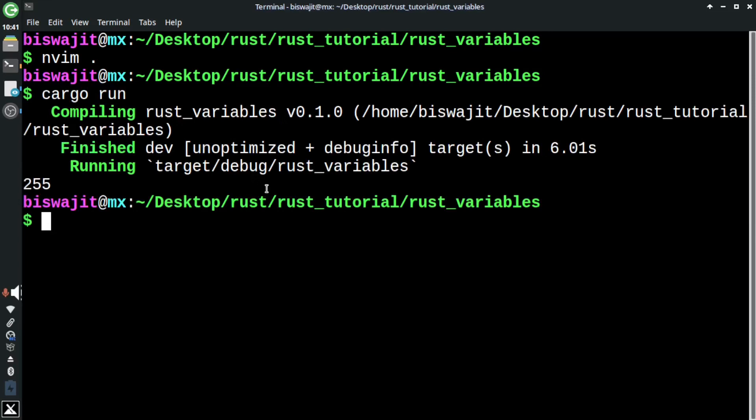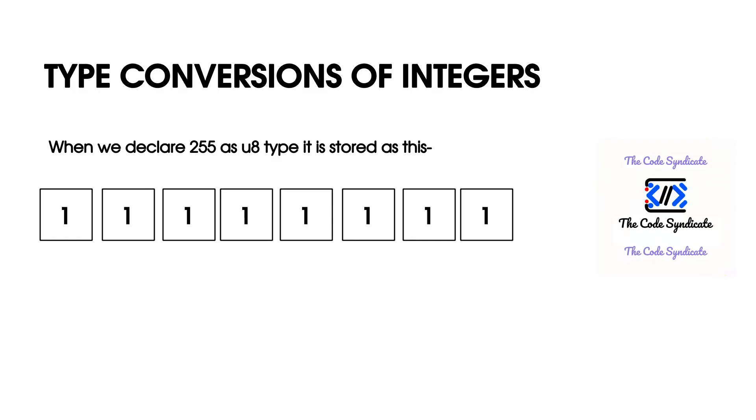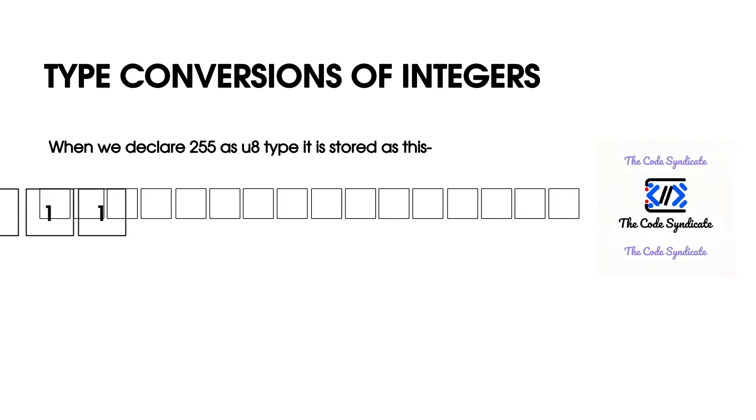Now let's check what is happening behind the scene. When we declare 255 as u8 type, it is stored as this. When we convert it to u16 type, it is stored as this.